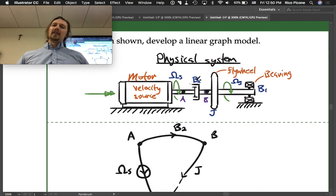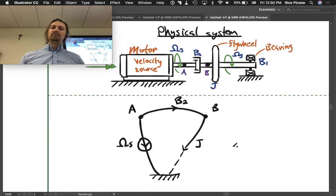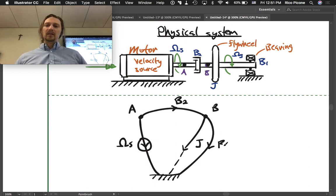Finally, B1 is the last element. B1 is the bearing damping, and it always connects - well, virtually always - the bearing is going to connect to ground, and it does this here as well.